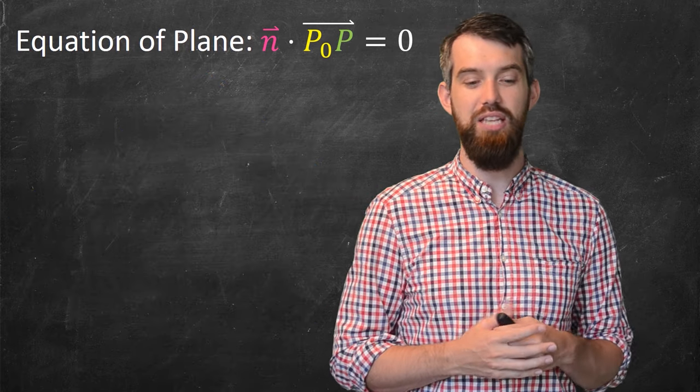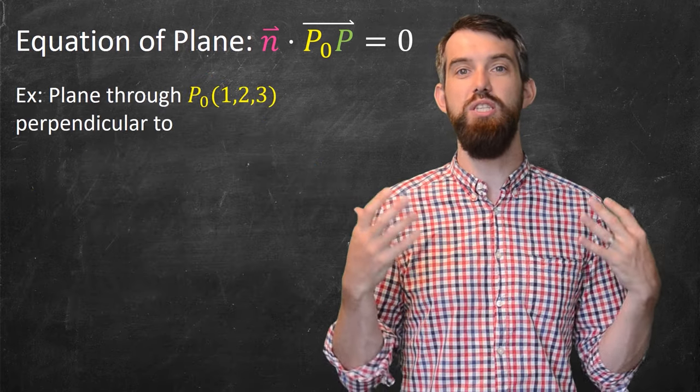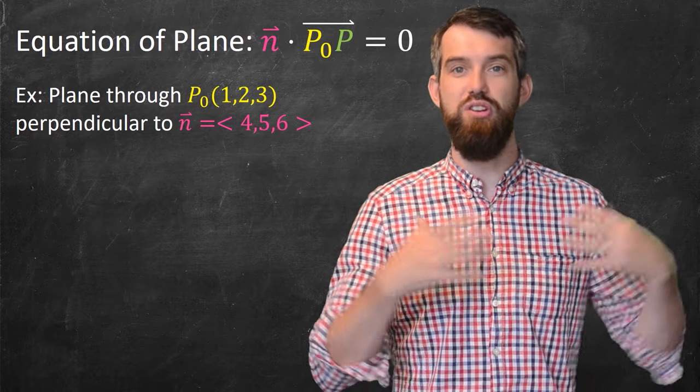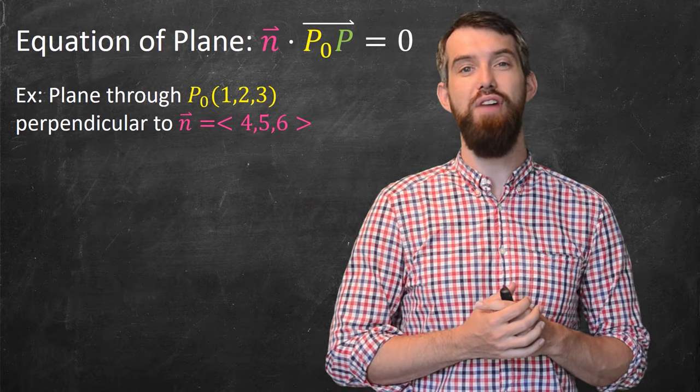Let's see how this works out in a specific example. So I'm going to choose the specific point P₀ is equal to 1, 2, 3, and the normal vector, the vector perpendicular to the plane, 4, 5, 6.